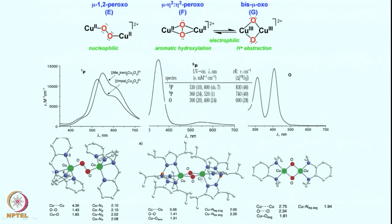Both the end-on and side-on species are peroxo units, meaning oxygen is reduced by two electrons — one from each copper. Starting from copper(I), after each copper gives one electron, we get copper(II)-copper(II)-O₂²⁻. The overall formulation gives a 2+ charge for the complex: 2− for peroxo, 2+ from each copper, yielding an overall 2+ species.